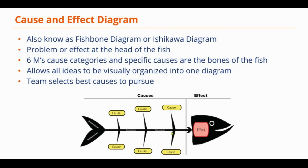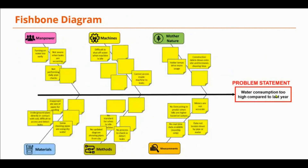It'd be nice to have data to support all these, but sometimes we don't have that data. So we have to select some to start with, and then we can go see if we can find data to show that it's actually contributing to the problem. For example, the problem might be that water consumption was too high compared to last year. We do a brainstorming and come up with Mother Nature reasons, like the temperatures are hotter than last year. If we decide that's something we want to dig into, we can pull data and look up last year's weather compared to this year and see if that's true.